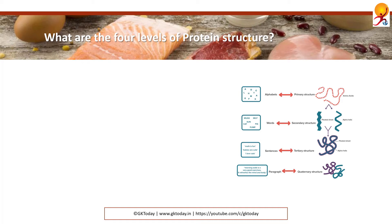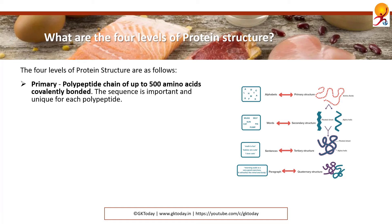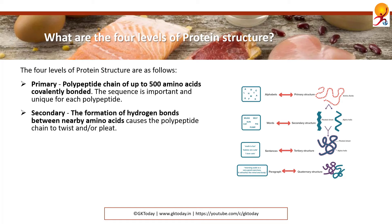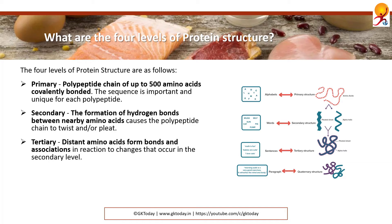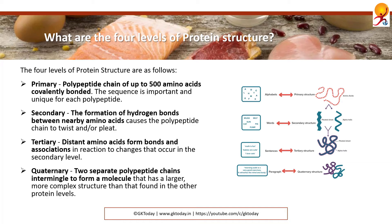What are the four levels of protein structure? The primary level consists of a polypeptide chain of up to 500 covalently bonded amino acids; the sequence is unique for each polypeptide. The secondary level involves hydrogen bonds forming between nearby amino acids, causing the polypeptide chain to twist or pleat. The tertiary level involves distant amino acids forming bonds in reaction to changes outside those bonds. The quaternary level is where two separate polypeptide chains intermingle to form a larger, more complex molecule.